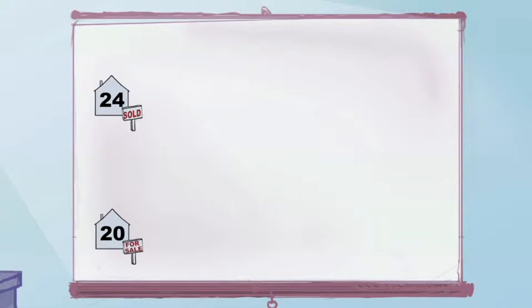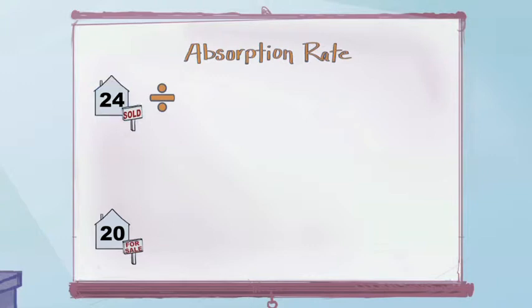Using this information we can calculate absorption rate per month by dividing the past year's total number of sales in the neighborhood, in this case 24, by 12 months. Therefore, the absorption rate for this area is two homes per month.